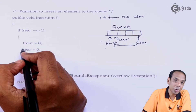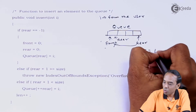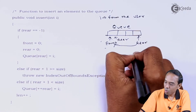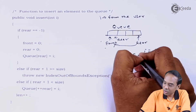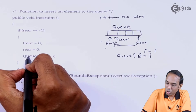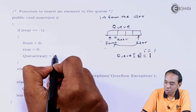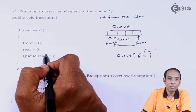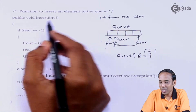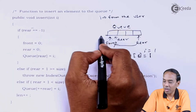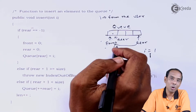Then we are going to point the position of i to q[rear]. Let's take i equal to one — so rear is zero, meaning q[0] equals one. The value taken from the user is transferred to the position located at rear equal to zero. This is the case where rear was minus one, so we forcefully make it zero and insert at position zero.